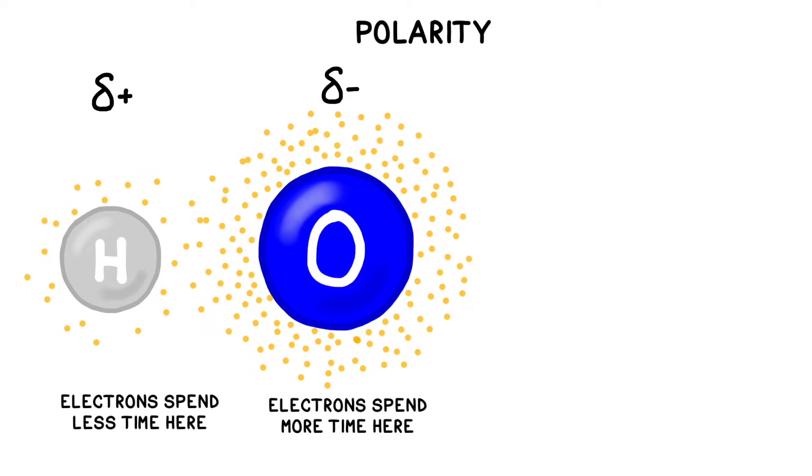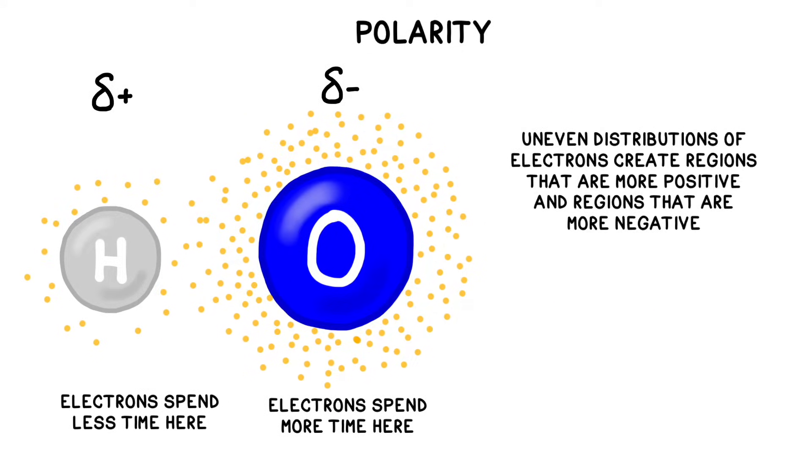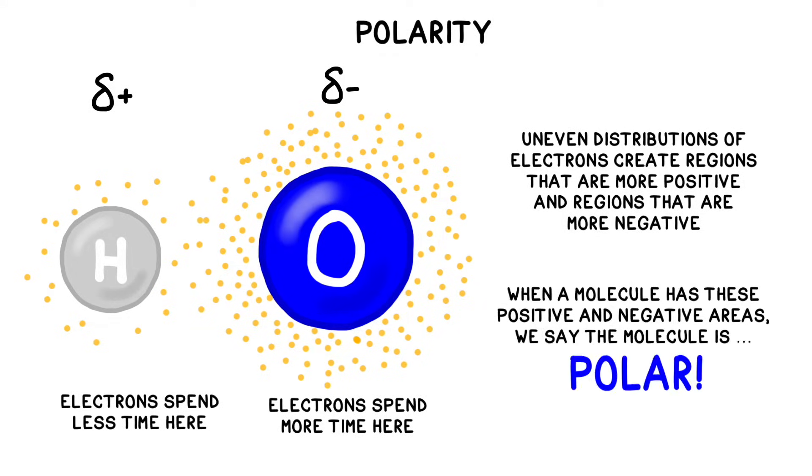When a molecule has these uneven electron distributions and therefore regions that are more positive and regions that are more negative, we say that a molecule is polar. The greater the difference between the electronegativity of the atoms in a bond, the more polar that chemical bond is.